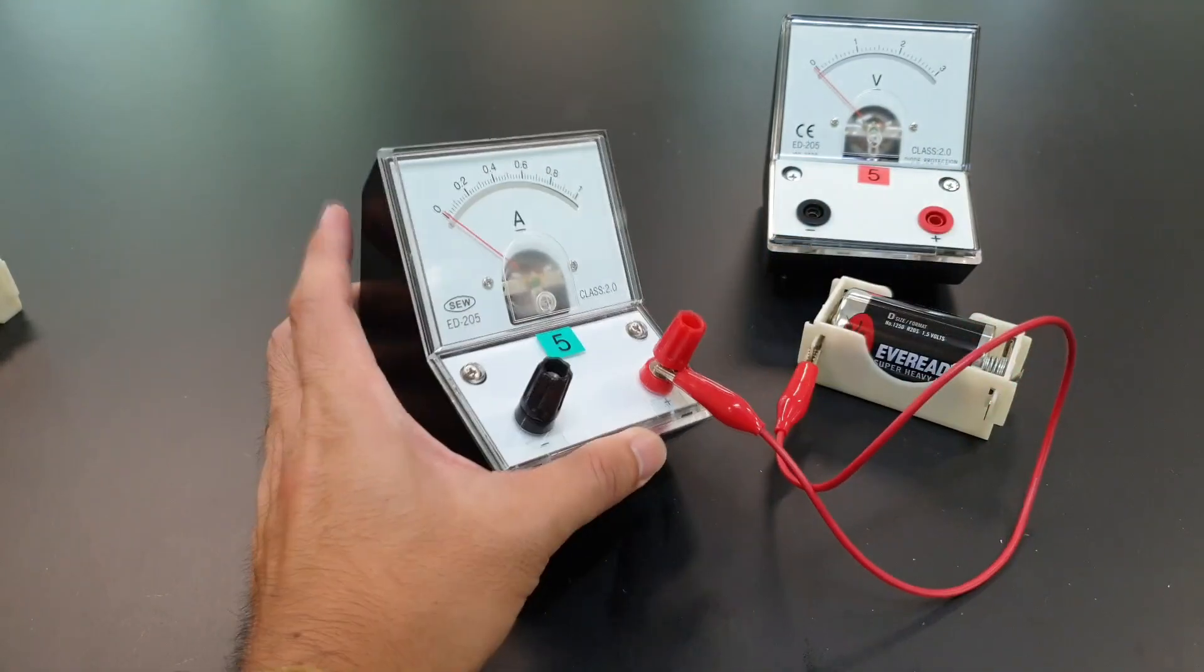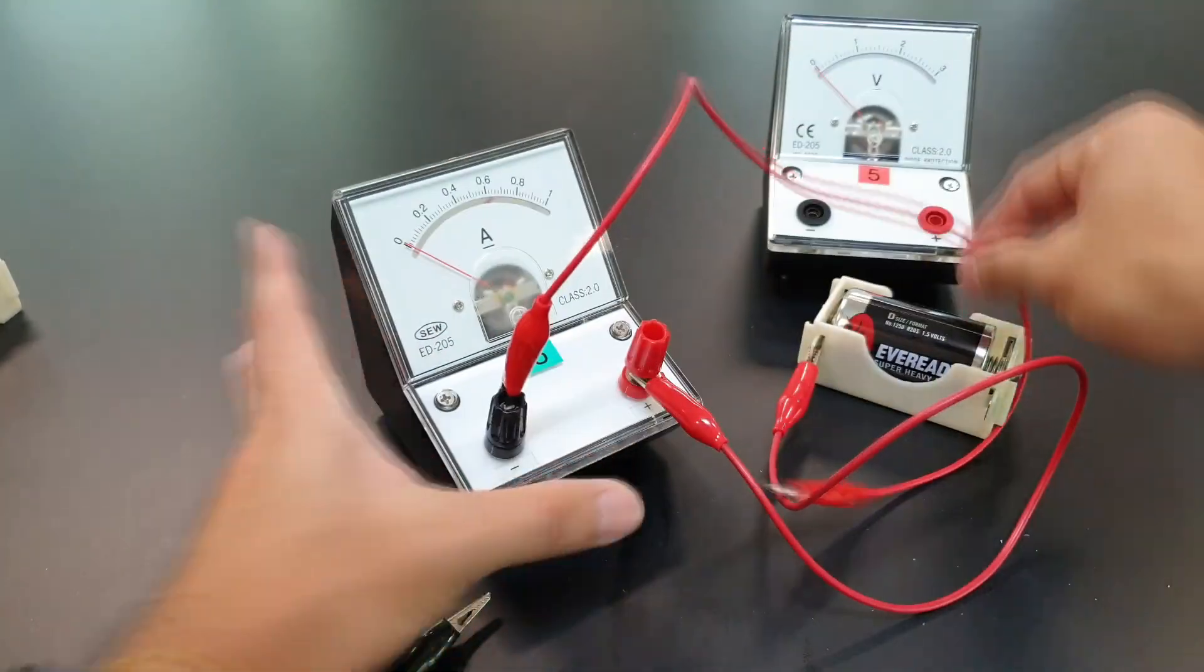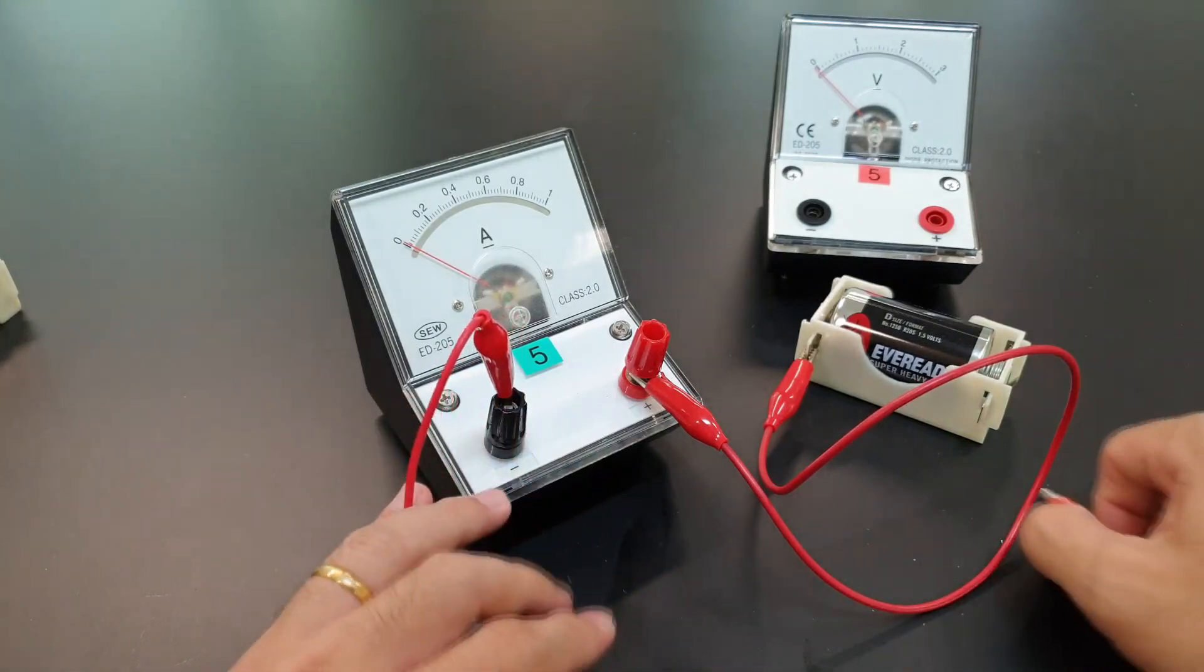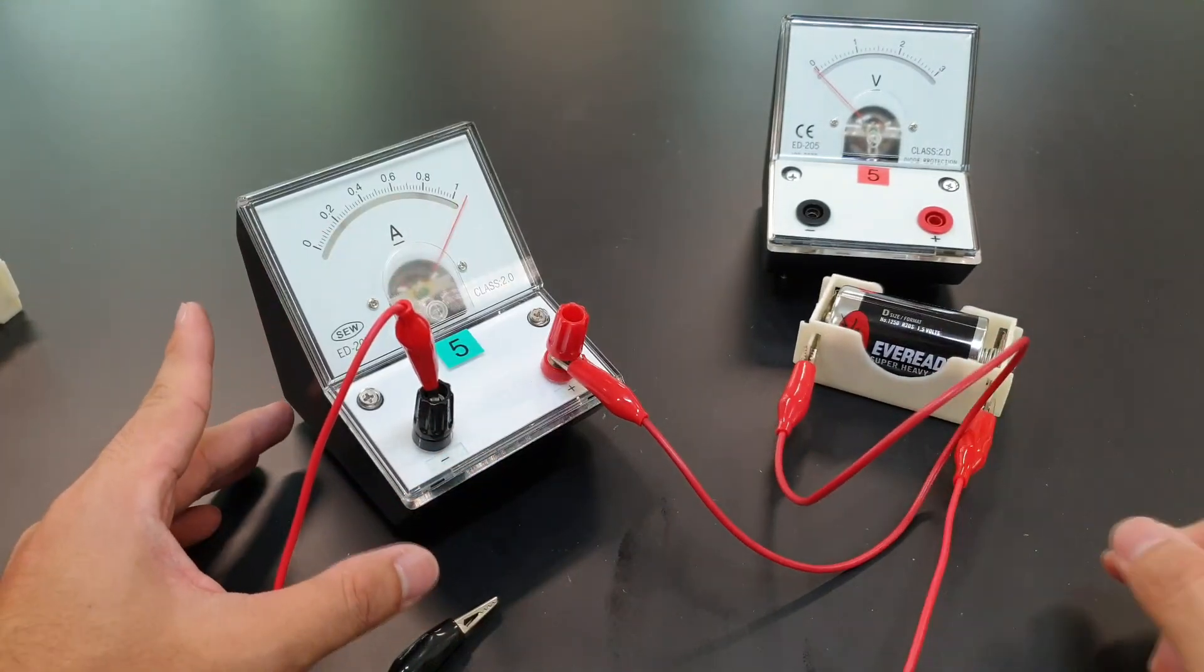So conventional current will come out from the negative terminal and back to the battery. If you realize, the color of the wires are not important.